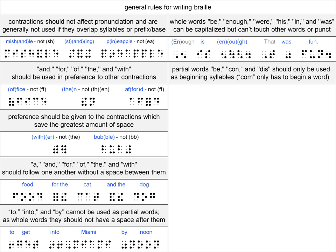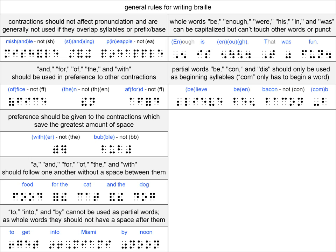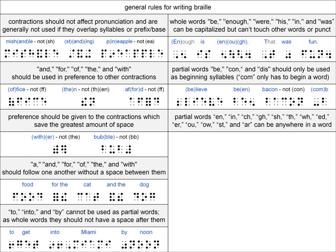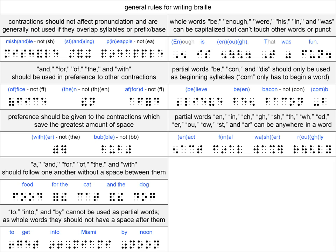The partial word contractions BE, CON, and DIS should only be used at the beginning of a word as a full syllable. So, for instance, the BE contraction can be used in the word believe, because BE is at the beginning of the word and it is the first syllable. However, it cannot be used in the word been, because although BE is at the beginning, it does not take up the whole first syllable, since been is a one-syllable word. The rule for the COM contraction is similar in that it must be at the beginning of a word, but it does not have to take up the whole first syllable, as seen in the one-syllable word comb. Most other two-letter partial word contractions, such as EN, IN, CH, and so on, can be used anywhere you find them in a word.